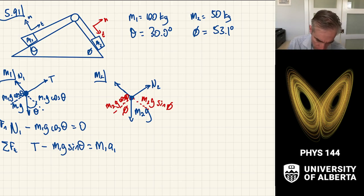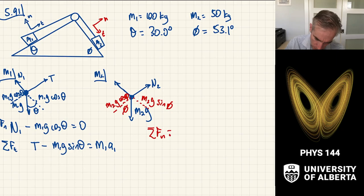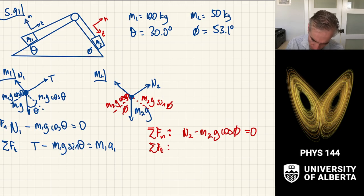And I'm being particular about this because I have to link the acceleration block one to block two. Similarly, over here for the sum of the forces in my normal coordinates for block two, that's going to give me that N2 minus M2g cos phi is going to be zero. And the sum of the forces in the tangential direction is going to be M2a2.